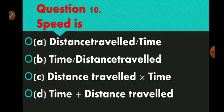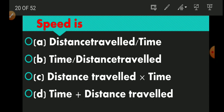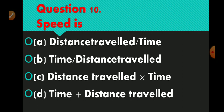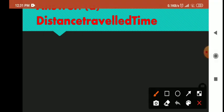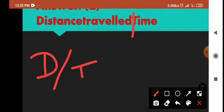Question number 10 is: speed is equal to. Option A distance traveled divided by time, option B time divided by distance traveled, option C distance traveled multiplied by time, option D time plus distance traveled. Speed is equal to option A — distance traveled divided by time taken. Note: the division sign may not be shown clearly in the question, so interpret it as distance divided by time.